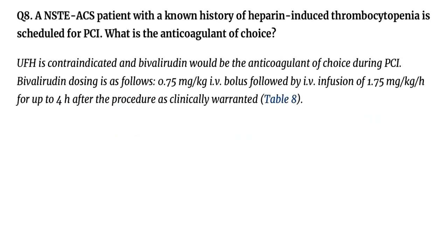Question 8. A NSTEACS patient with a known history of heparin-induced thrombocytopenia is scheduled for PCI. What is the anticoagulant of choice? Unfractionated heparin is contraindicated and bivalirudin would be the anticoagulant of choice during PCI. Bivalirudin dosing is as follows: 0.75 mg/kg IV bolus followed by IV infusion of 1.75 mg/kg/h for up to 4 hours after the procedure as clinically warranted. Table 8.